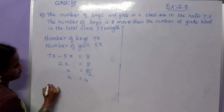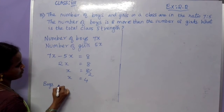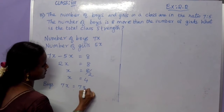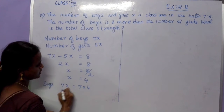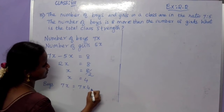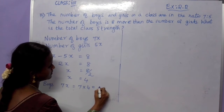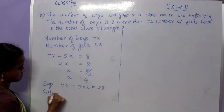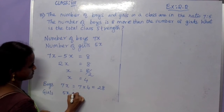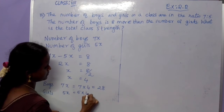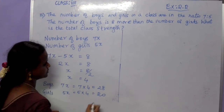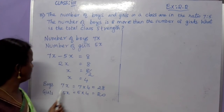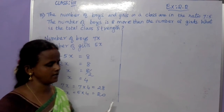Now, the number of boys is 7x. So 7 multiplied by 4 — substitute 4 for x. 4 sevens are 28. Next, girls: 5x. So 5 into 4 is equal to 20. So the number of boys is 28 and the number of girls is 20.